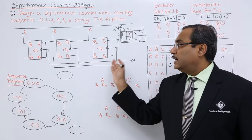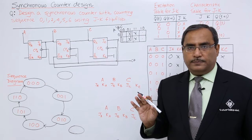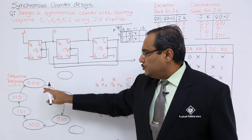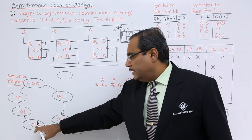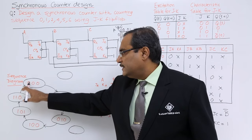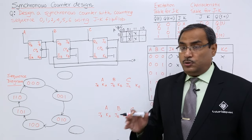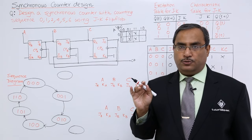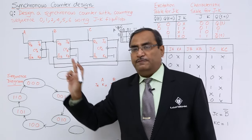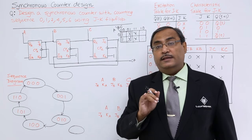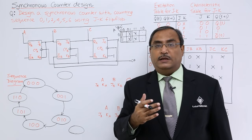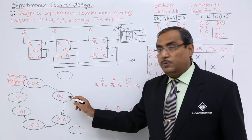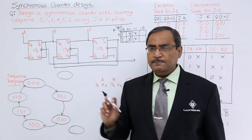The sequence diagram shows: 0 → 1 → 2 → 4 → 5 → 6 → 0. To verify, if all flip-flops are reset to 0,0,0 and the next clock pulse is applied, the output becomes 0,0,1 (which is 1), confirming the sequence starts correctly. But we must also check the two missing states, 3 and 7.